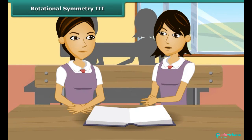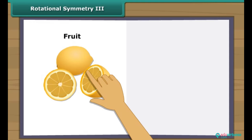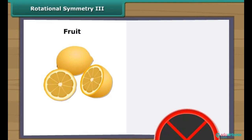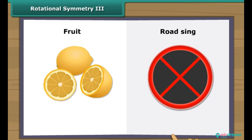Priya, can you tell the shapes around us which have rotational symmetry? Yes — when we slice certain fruits, the cross sections are shapes with rotational symmetry. There are also many road signs that have rotational symmetry.